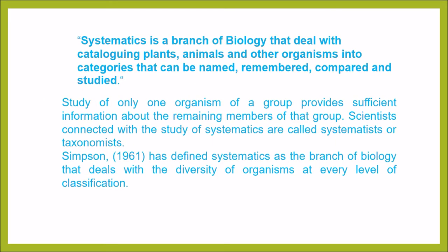Systematics is a branch of biology that deals with cataloguing plants, animals, and other organisms into categories that can be named, remembered, compared, and studied. Study of only one organism of a group provides sufficient information about the remaining members of that group. Scientists connected with the study of systematics are called systematists or taxonomists. Simpson (1961) defined systematics as a branch of biology that deals with diversity of organisms at every level of classification.